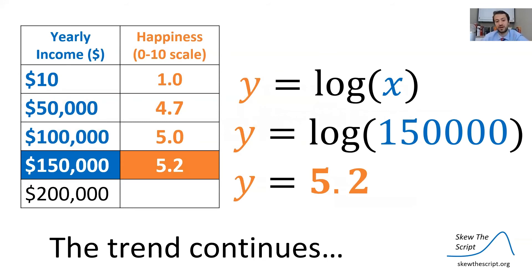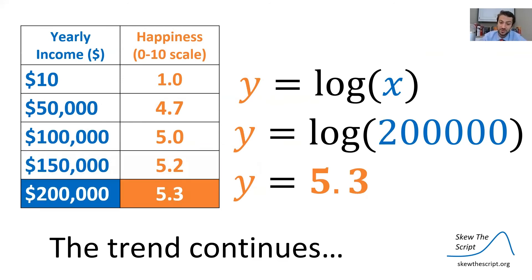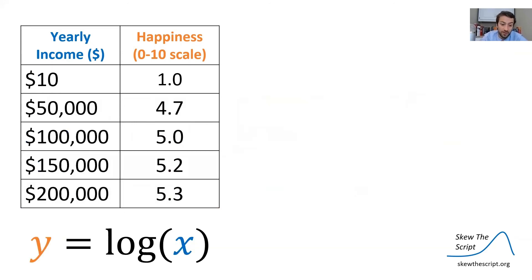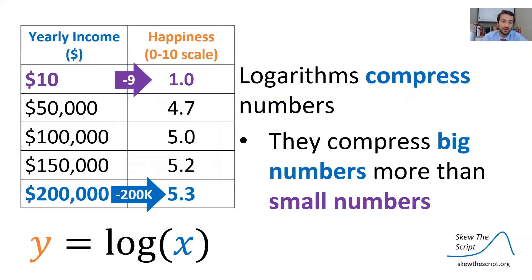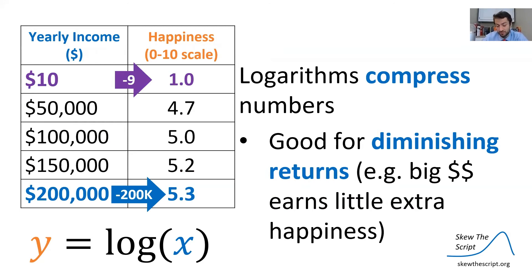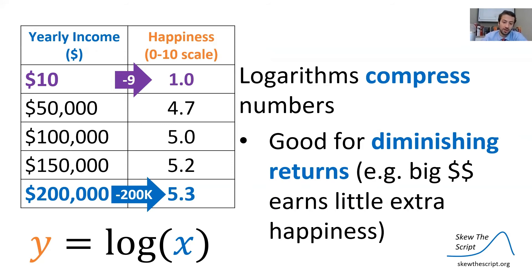Returning to our table with higher income values: another $50,000 increase to $150,000 per year increases happiness by just 0.2, and at $200,000 per year, happiness increases by only 0.1 to reach 5.3. Logarithms compress big numbers down to a smaller scale — they take large numbers like yearly income and compress them more than small numbers. Yearly income of $10 gets compressed to 1; $200,000 gets compressed to 5.3. This is a good property of logarithms for modeling diminishing returns, where big money or a large salary earns little extra happiness compared to early gains.